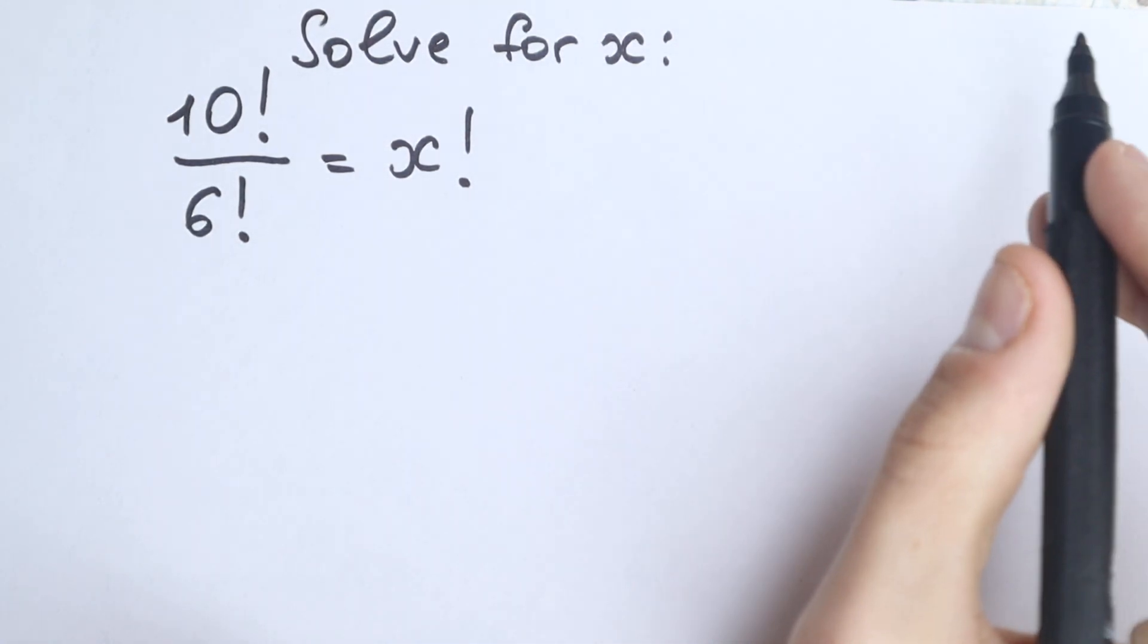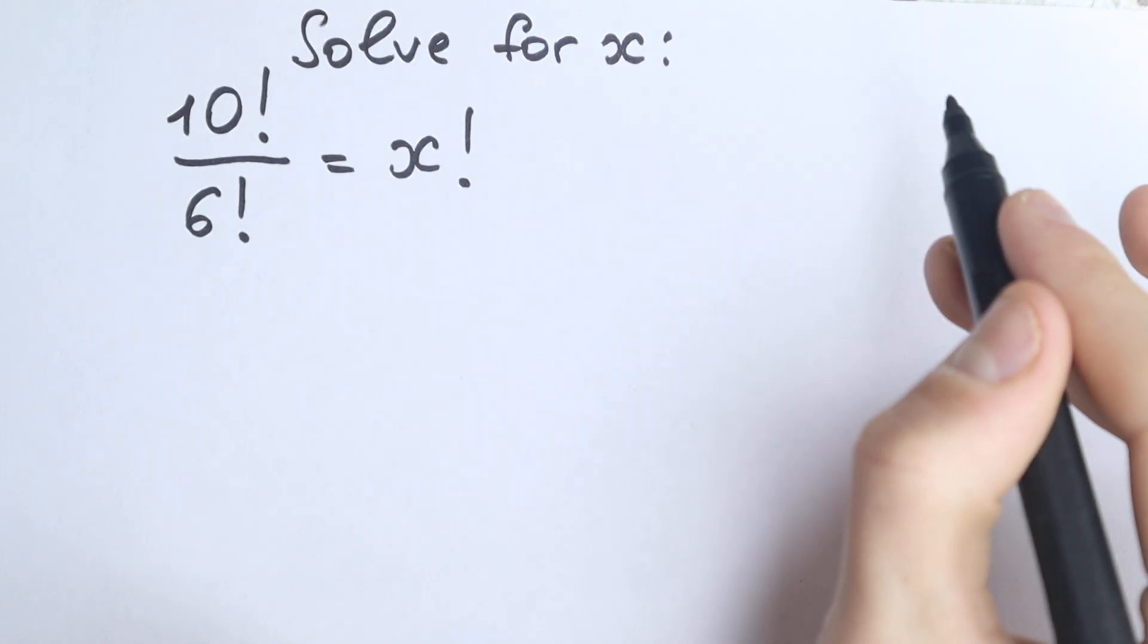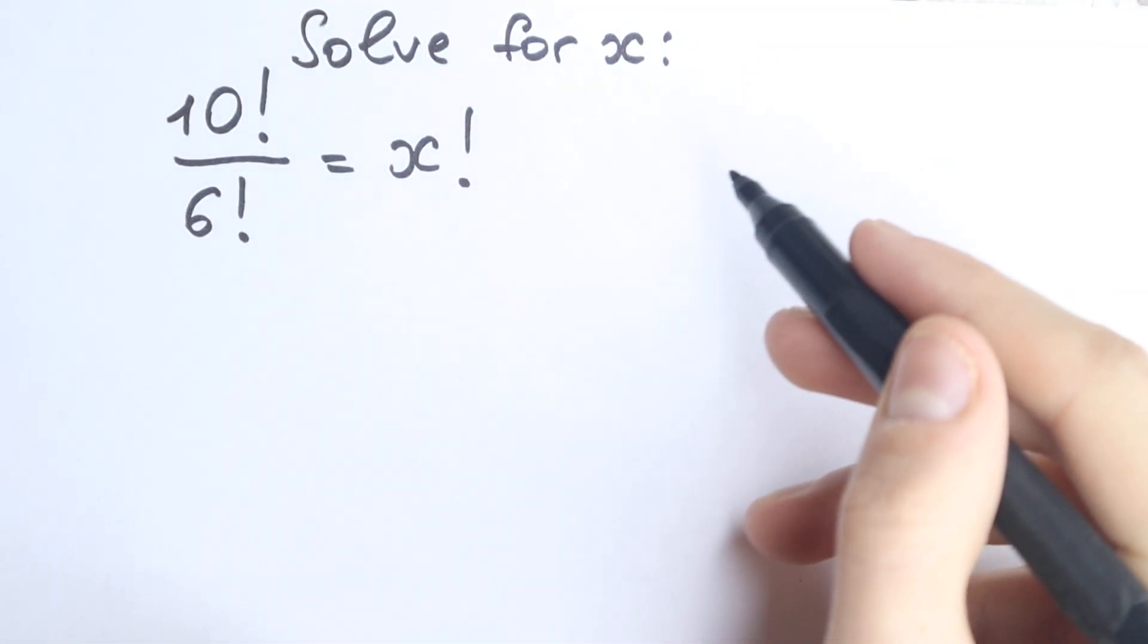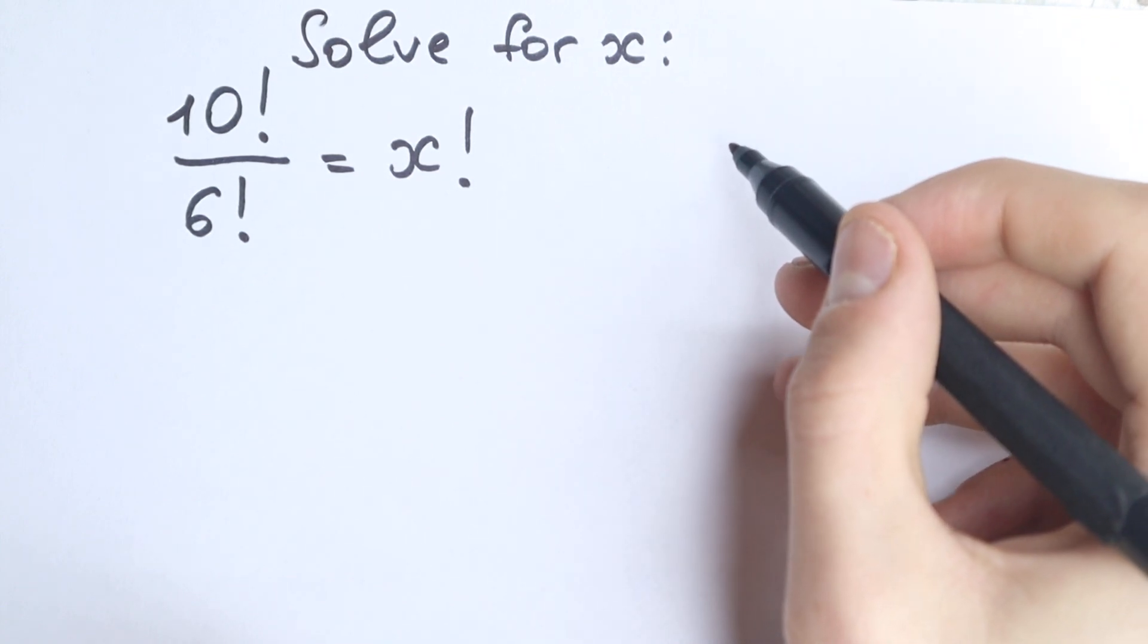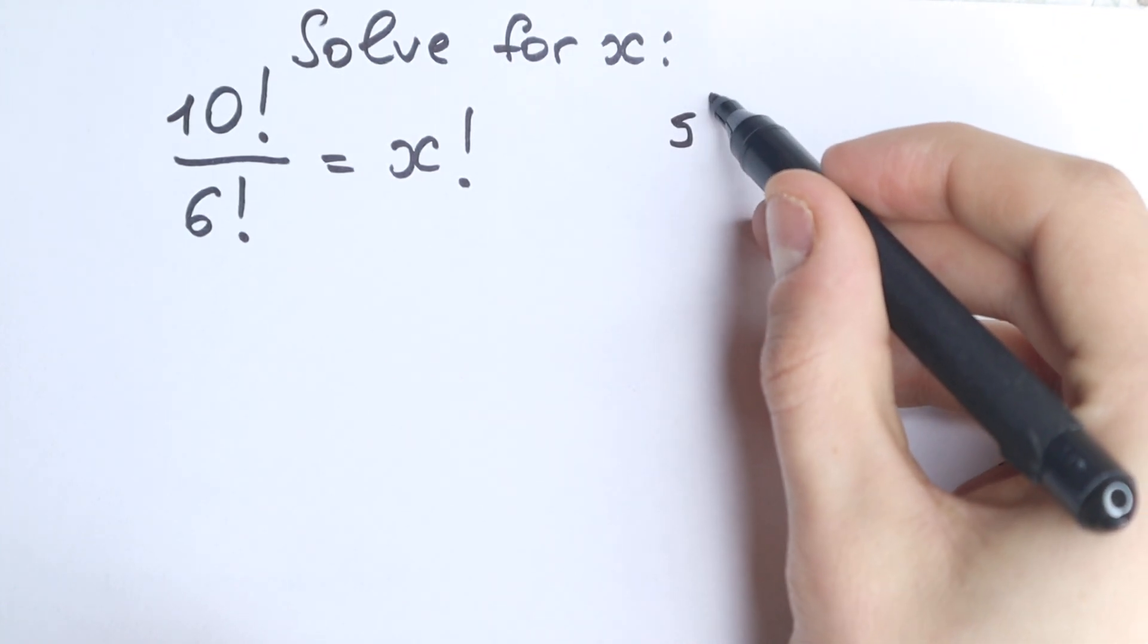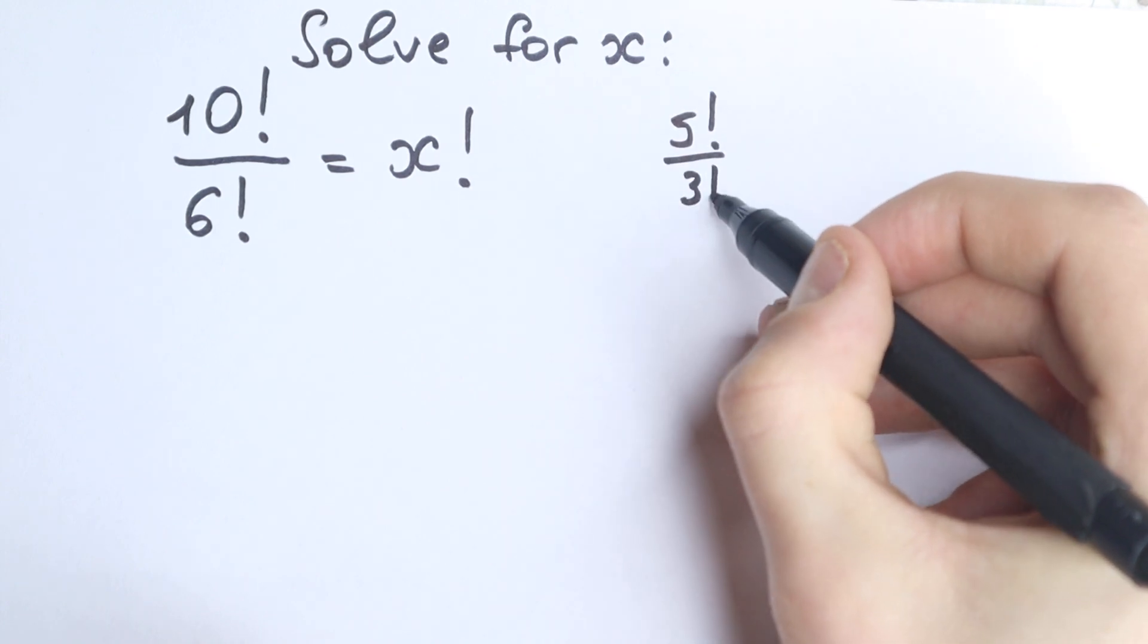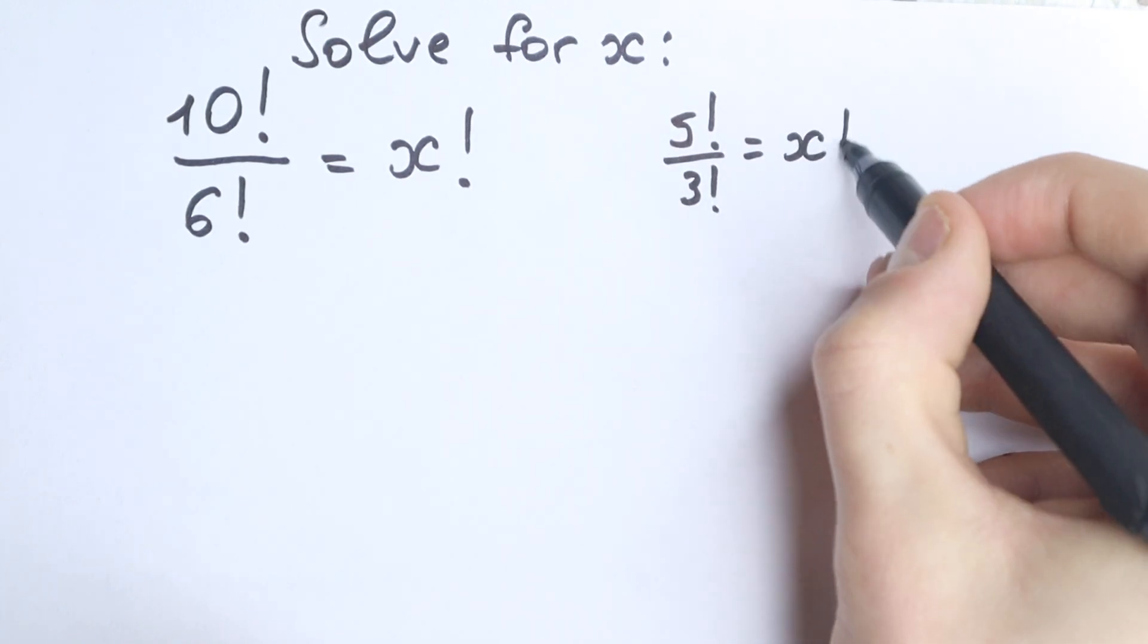A lot of students, maybe half of students try to find this question very easy and try to cancel this numerator and denominator. They think, okay, 10 factorial, 6, let's divide it by 2, so as a result 5 factorial over 3 factorial equals x factorial, something like that.